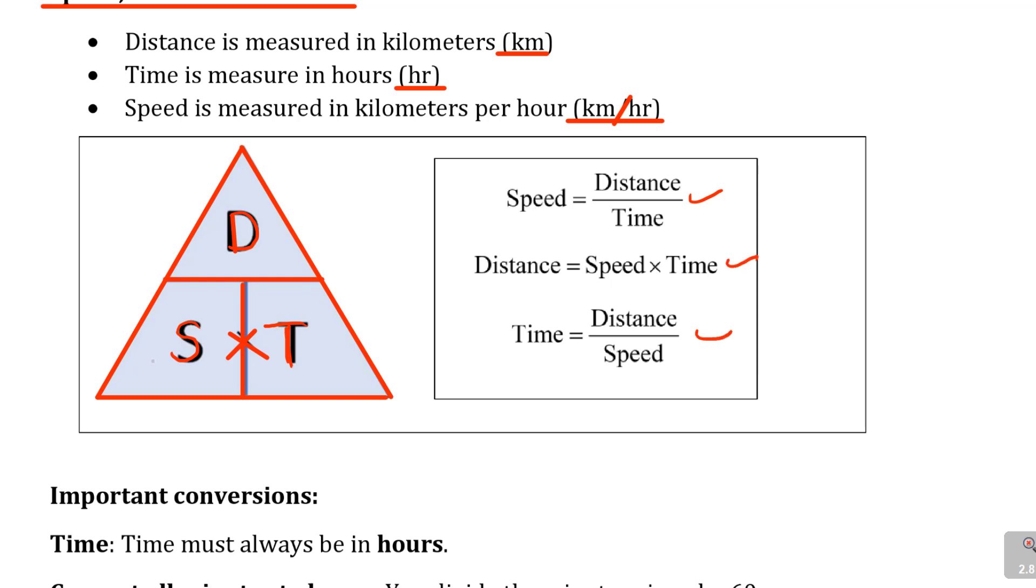And then this explains these formulas here. What is speed? S is distance over time. Distance is S times T, which is speed times time. And what about time? It's distance over speed. This triangle will actually help you a lot.